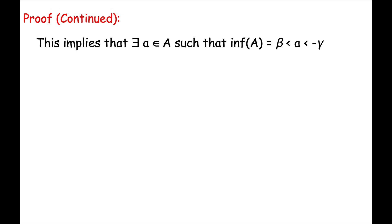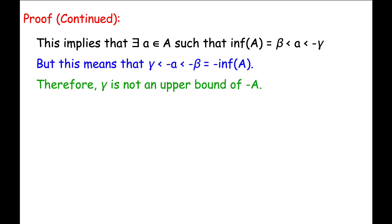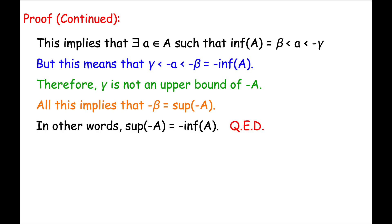Remember what we're trying to do: we're trying to show that negative beta — which is the negative of the inf of capital A — is the sup of negative capital A. So if we assume gamma is less than negative beta, our goal is to show that gamma is not an upper bound of negative capital A. Assuming gamma is less than negative beta implies, by multiplying both sides by negative 1, that beta is less than negative gamma. But beta is the greatest lower bound of capital A, so there must be some little a in capital A between beta and negative gamma. Multiplying both sides of an inequality by negative 1 again, we conclude that gamma must be less than negative little a, which is less than negative beta. Since gamma is less than negative little a, gamma is not an upper bound of negative capital A. But gamma was an arbitrary real number less than negative beta. Therefore, negative beta must be the least upper bound of negative capital A — it must be the sup of negative capital A. In other words, the sup of negative capital A is the additive inverse of the inf of A. QED.